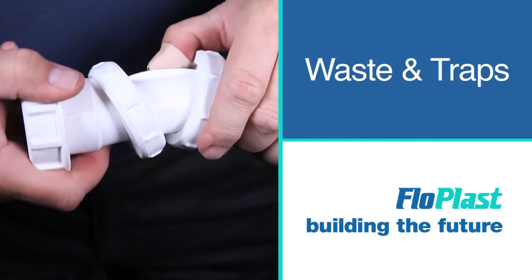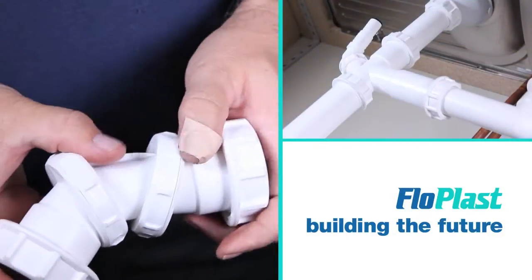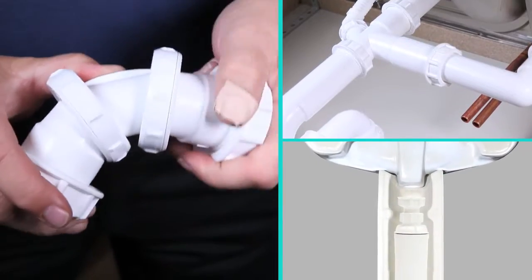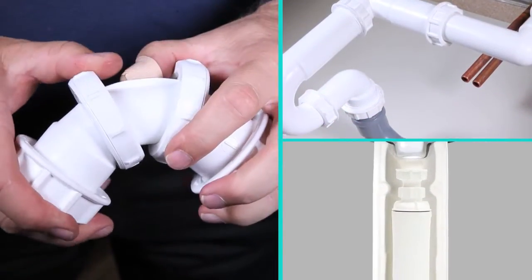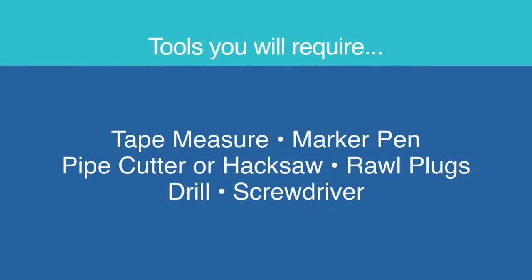Flowplast's waste and trap systems are compatible with all British standard waste outlets on sinks, baths, and hand basins. Flowplast's extensive range covers virtually every situation and environment.